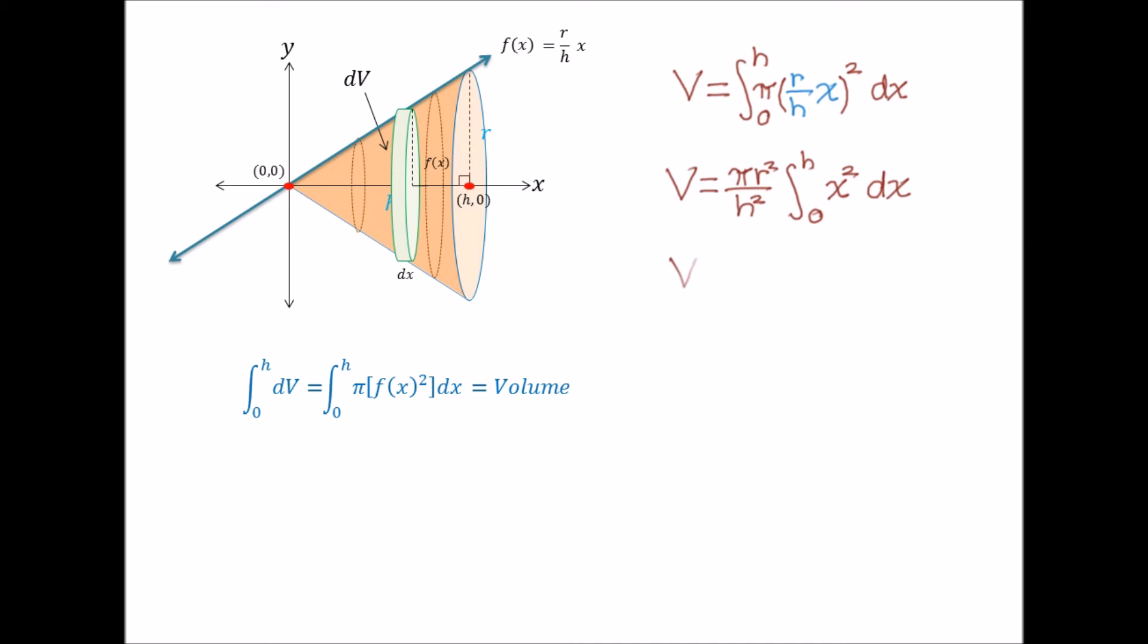Integrating, we then get the following. Plugging in our limits, the bracket simplifies to h³/3, and seeing that h³/h² is simply just h, we then arrive at πr²h/3.